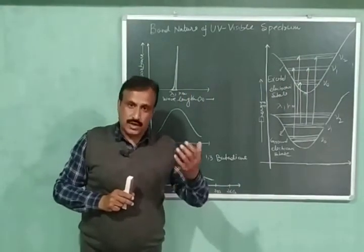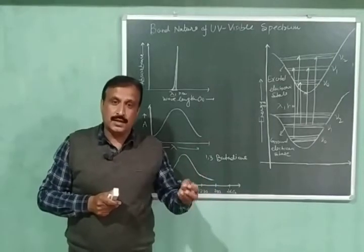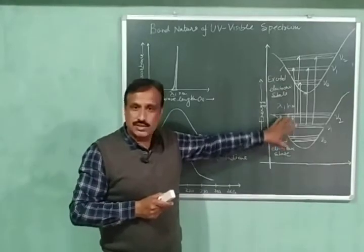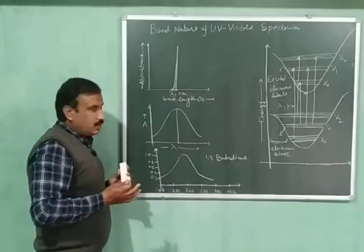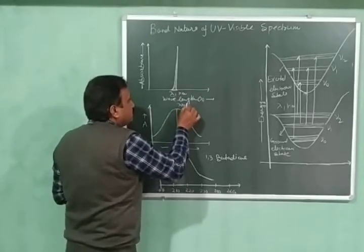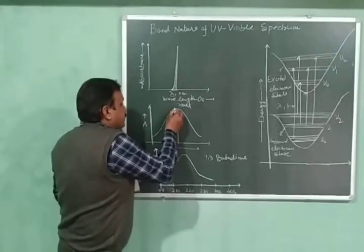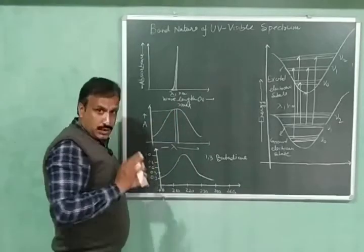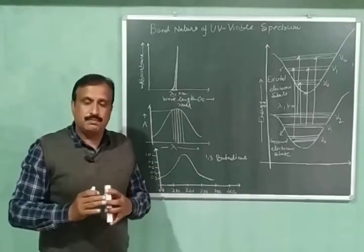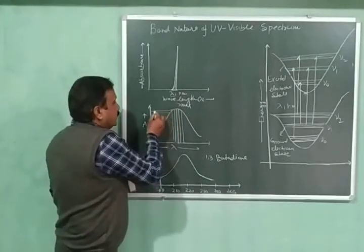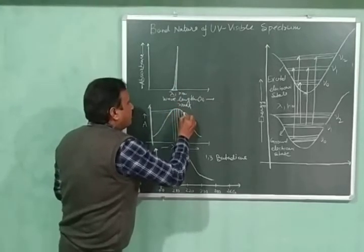These transitions differ slightly in their energy, so a number of wavelengths will be absorbed — those wavelengths whose energy corresponds to these transitions. This means that in addition to the lambda maximum, a number of nearby wavelengths will also have significant absorbance. All the wavelengths in the vicinity of lambda maximum will have good absorbance. In this way, a number of wavelengths will be absorbed, and instead of a sharp peak, we will have a broad peak.